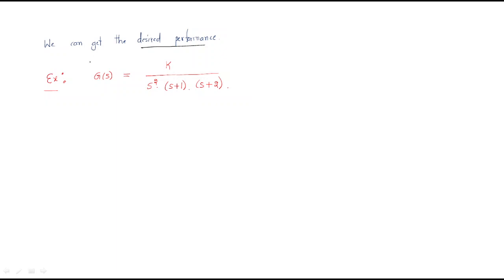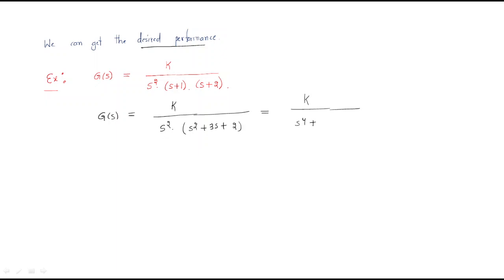Now let's look at an example of how controllers and compensators affect system stability. The system G(s) = K / [s²(s+1)(s+2)]. To analyze stability we find the characteristic equation: 1 + G(s)·H(s) = 0, which gives s⁴ + 3s³ + 2s² + K = 0.